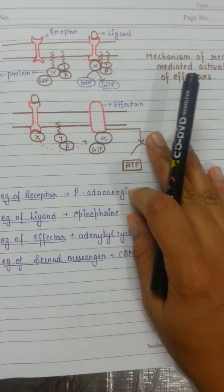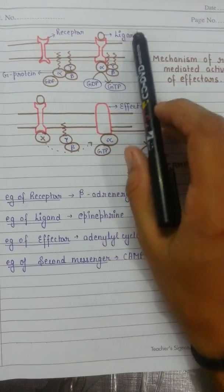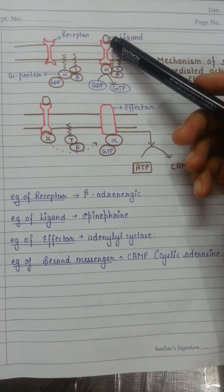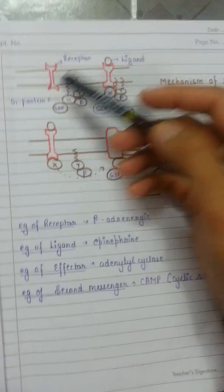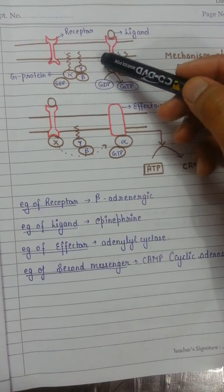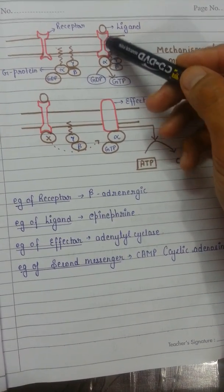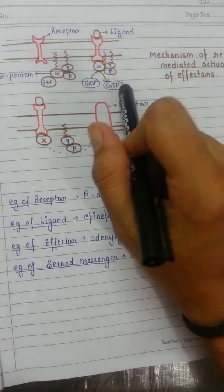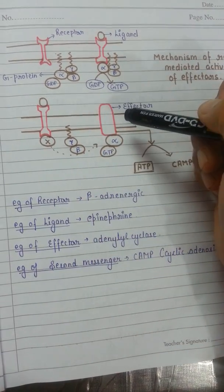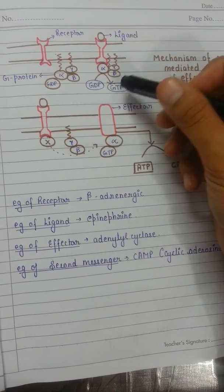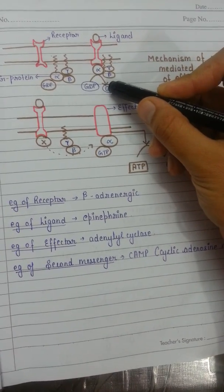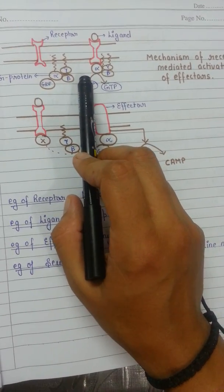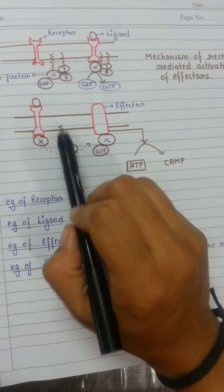Now I'm going to discuss the process taking part in the G-protein coupled receptor pathway for response generation. For example, we are taking the beta-adrenergic receptor and epinephrine as the ligand. The ligand binds to the receptor and alters its conformation, increasing its affinity for the G-protein. In the next step, the G-alpha subunit releases its GDP, which is replaced by GTP.